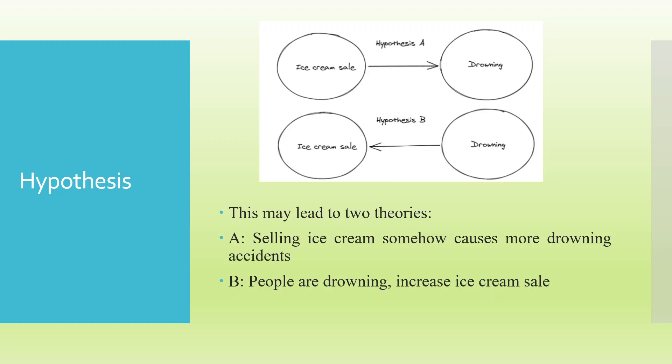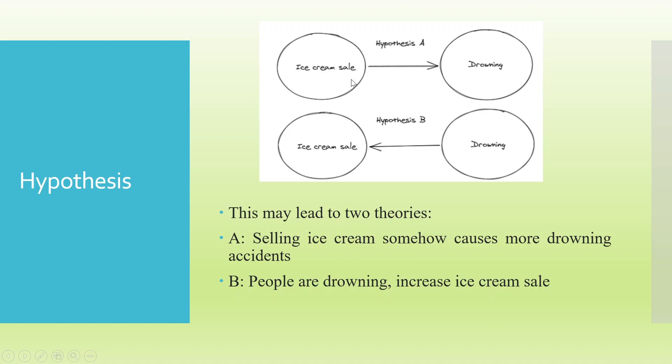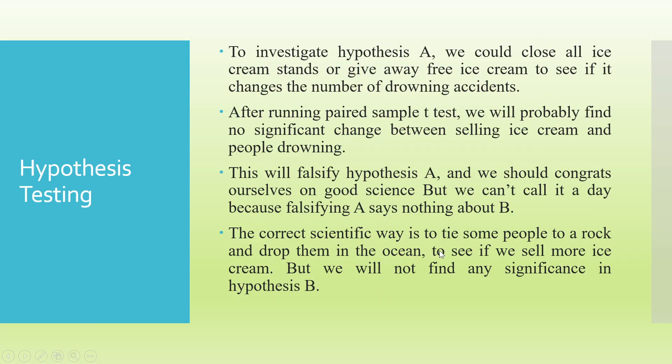The first is hypothesis A and the second is hypothesis B. To investigate hypothesis A, we would close all the ice cream stands or give free ice cream to see if it changes the number of drowning accidents. After running a paired sample T-test, we will probably find no significant change between selling ice cream and people drowning. This will falsify hypothesis A — good science — but we cannot call it a day because falsifying A says nothing about B. We have to test whether more drowning increases ice cream sales. The correct scientific way is to tie some people to a rock and drop them into the ocean to increase drowning, to see if we sell more ice cream. We will not find any significance in hypothesis B either.